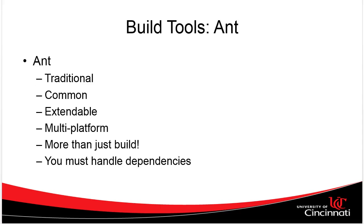Ant is XML-based and has been around a while — it's very commonly used and extendable. You can write Java classes, express those classes through an XML tag, and put that tag in your Ant script. So if you have a custom build process — maybe you need to FTP something down from a server, expand it, and change something inside — you can write a Java class to do this and have Ant call it. A huge benefit is that Ant is multi-platform, and it can do more than just build: move files, copy files, delete files. Really, it's an all-purpose scripting tool.